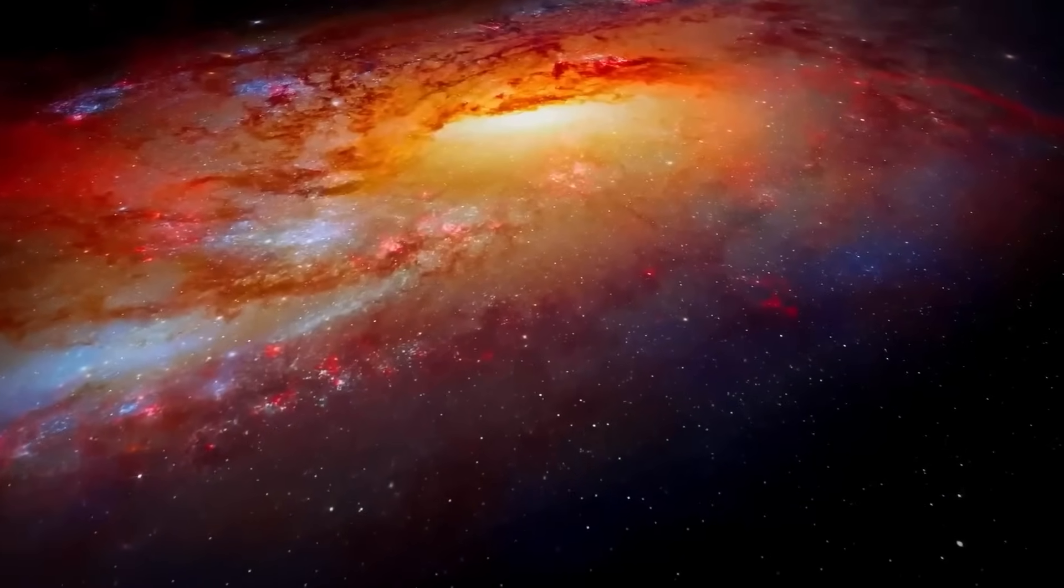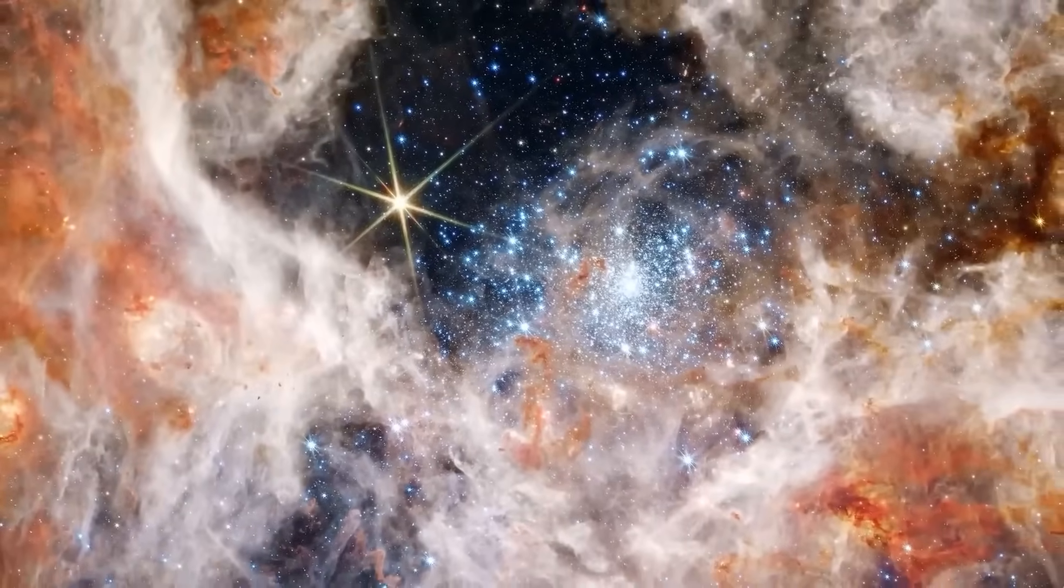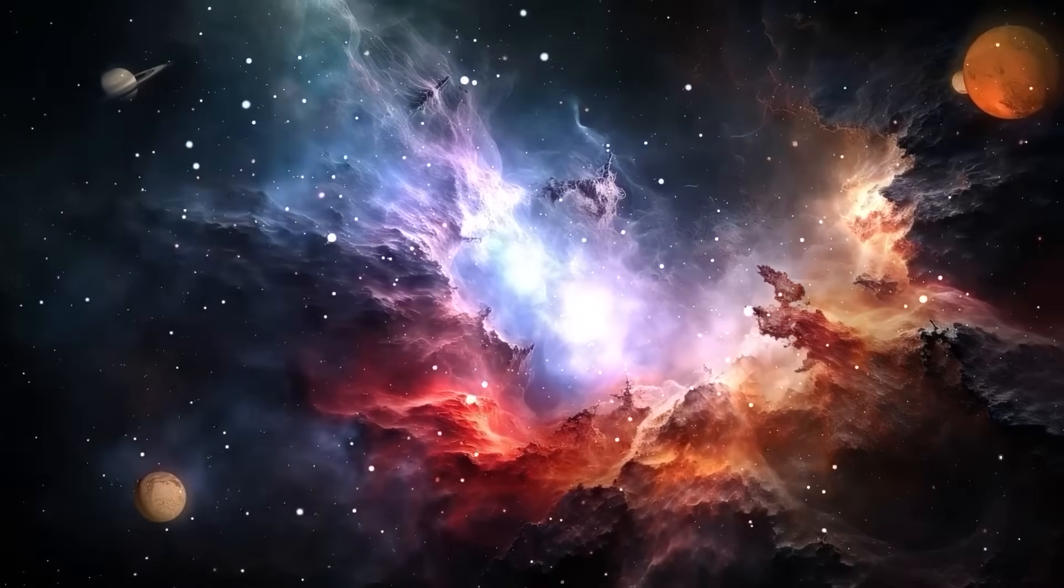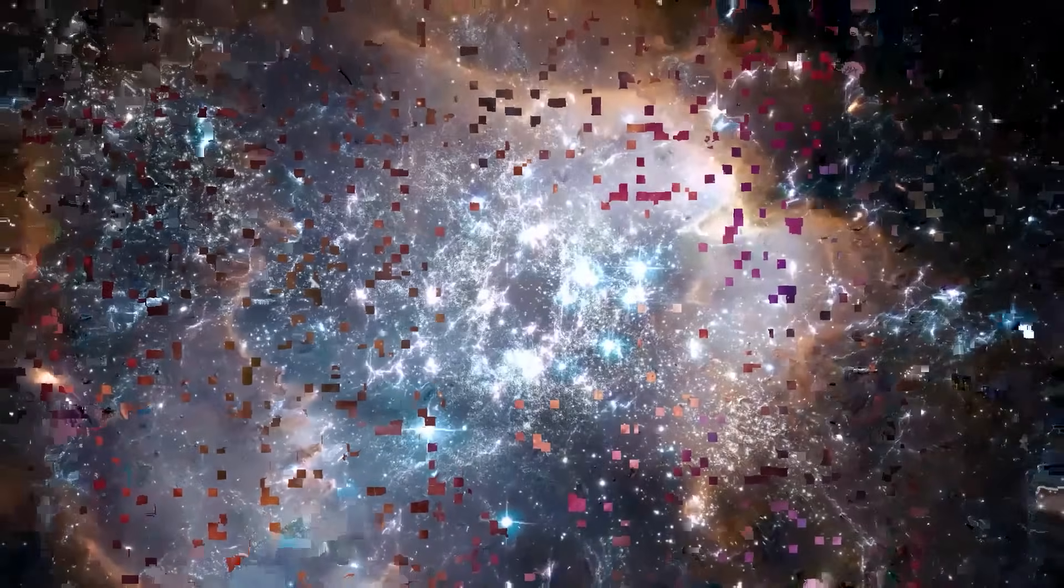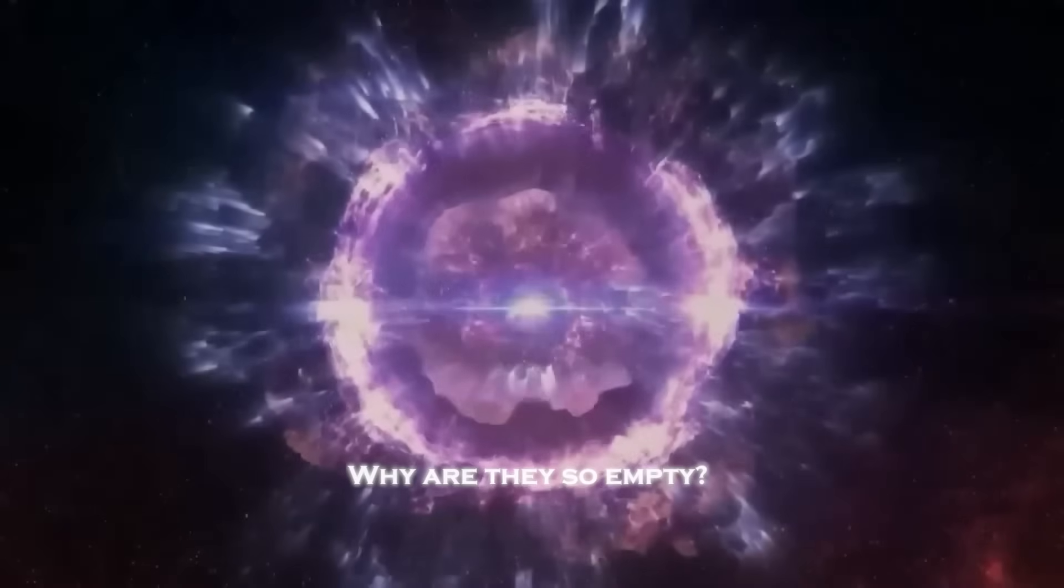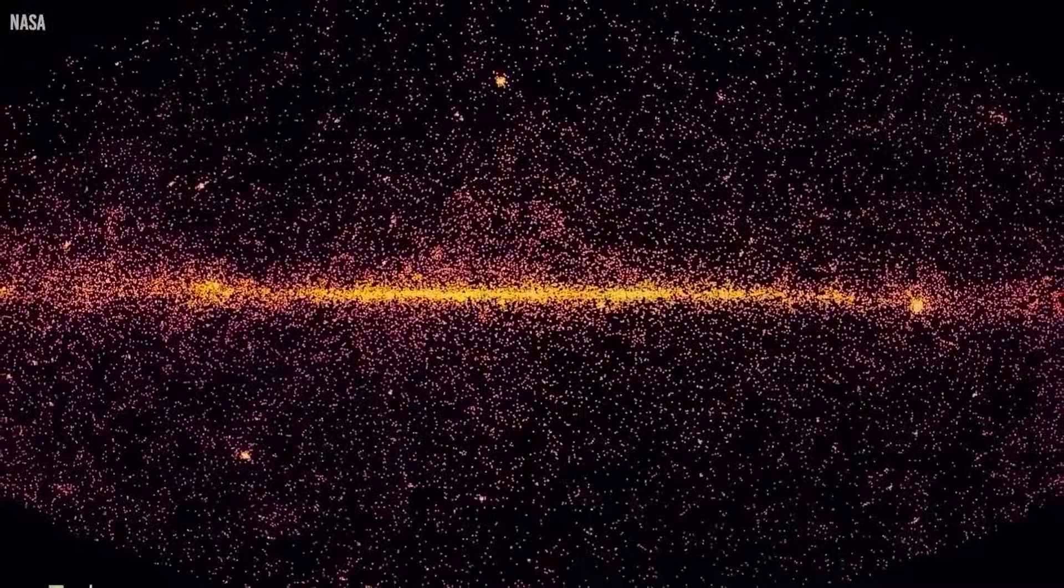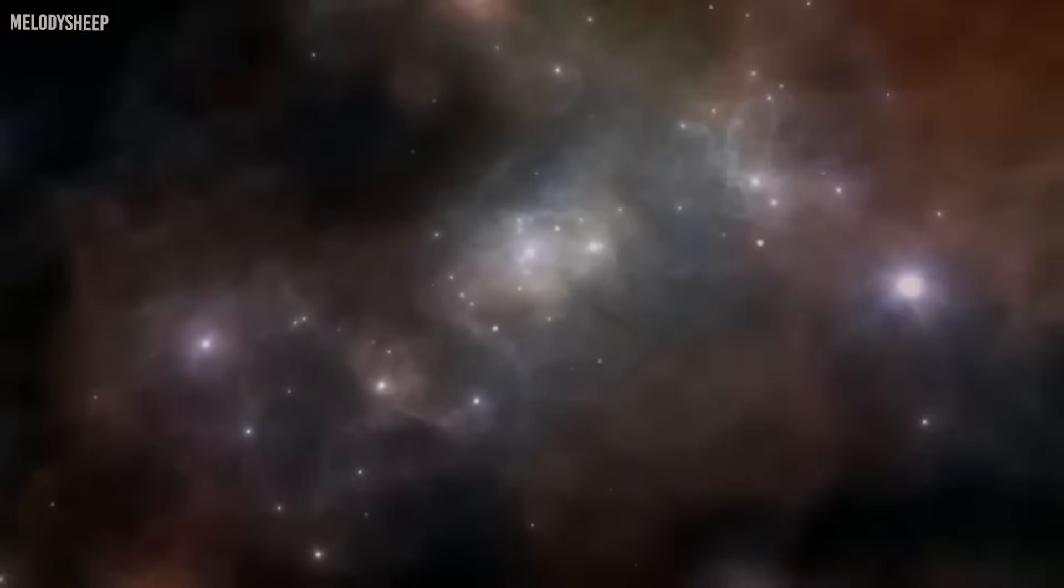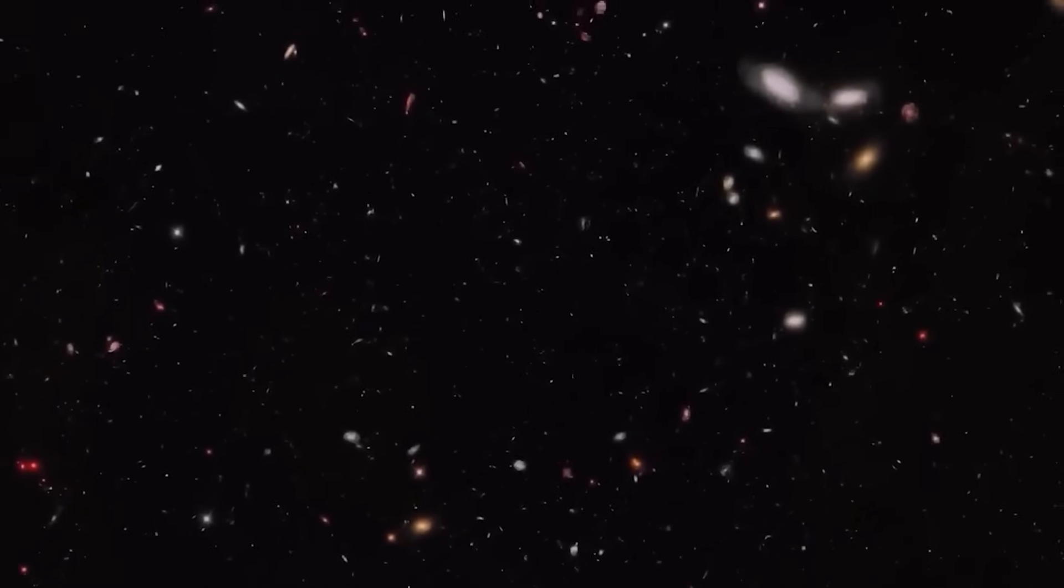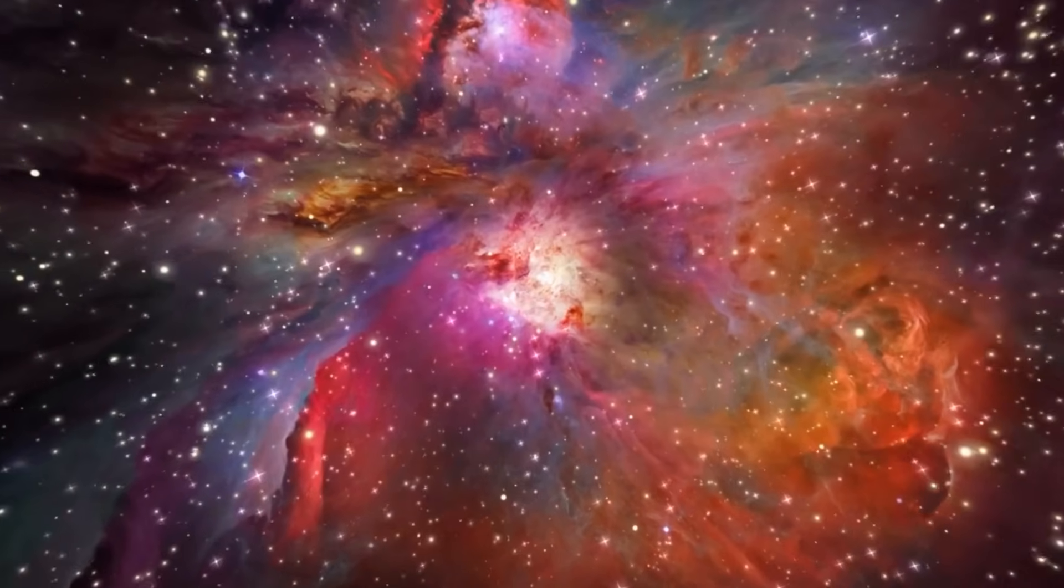While the James Webb Telescope has revealed the stunning beauty of galaxies and nebulae, it has also provided insights into the vast emptiness of cosmic voids, regions of space with almost no matter or light. These voids, spanning hundreds of millions of light years, challenge our understanding of the universe's structure. Why are they so empty, and what forces created these vast, barren regions? By studying the boundaries of these voids and the galaxies that surround them, Webb is helping researchers piece together the puzzle of how matter is distributed across the universe, revealing a balance between chaos and order in the cosmos.